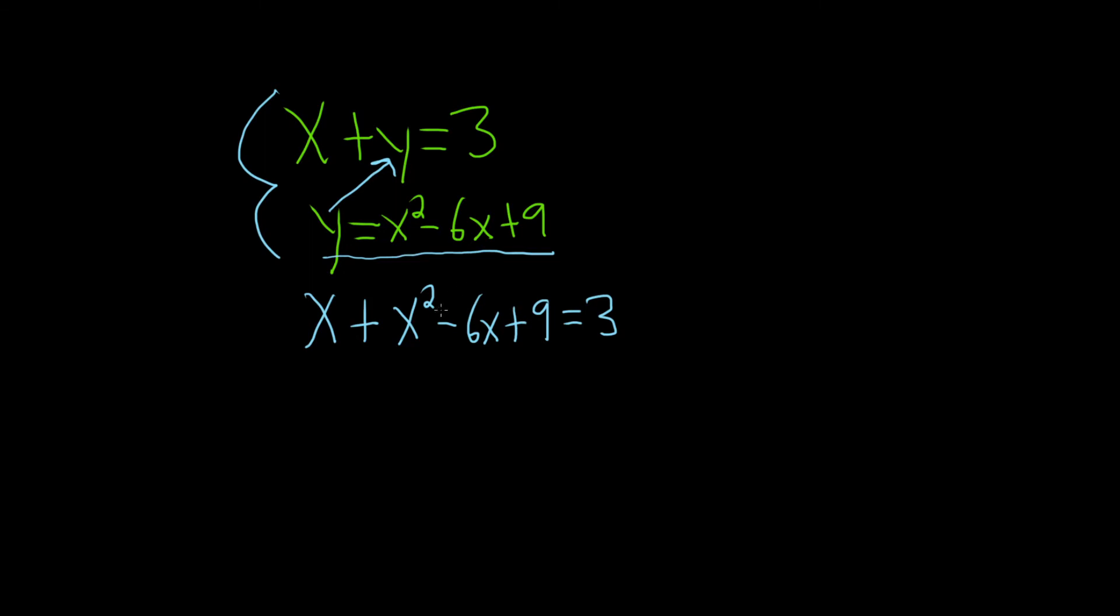All right, so now we can combine like terms. So we have x squared. 1x minus 6x will be minus 5x. We have plus 9 equals 3.